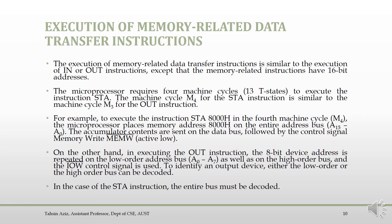The microprocessor is the 8085. The OUT instruction uses an 8-bit address — low-order and high-order — and uses the IOW control signal. The output device decodes either the low-order or high-order address bits. The STA instruction, by contrast, places the full 16-bit address on the address bus, which is why it requires more machine cycles.